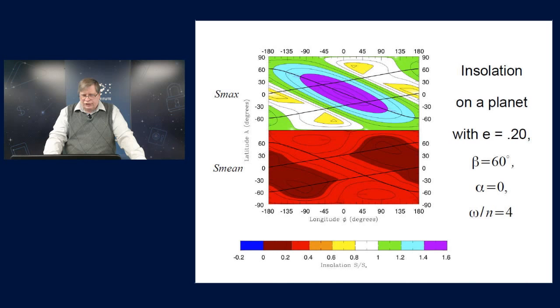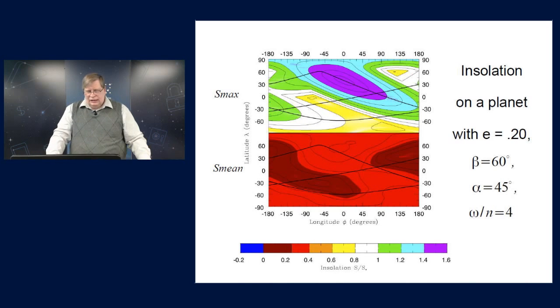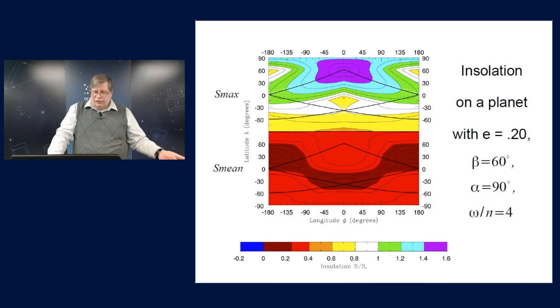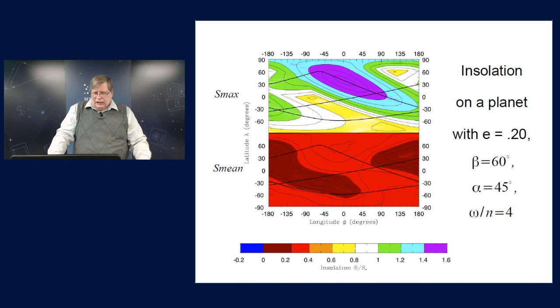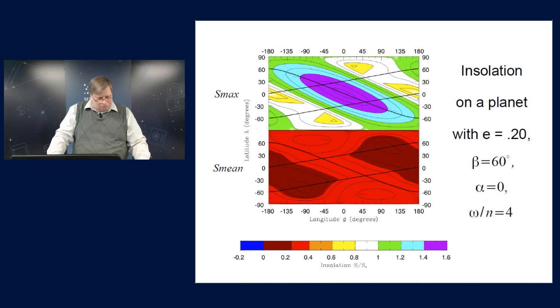But, as we go to higher and higher resonances, the contrast in these plots is decreasing. As we went to very high order resonances, numbers of, say, omega over n is 10, 20 or higher, these plots look almost as if the planet were not resonant at all. They become independent of longitude and depend only on latitude.